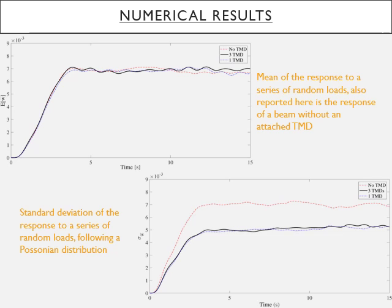Interestingly the numerical results show that the mean response to a series of random loads for any configuration of the beam with no TMD, with three TMDs, or with only one TMD is virtually identical. In the standard deviation we see that having one or three TMDs offers no advantage between one or three but offers a significant advantage over not having any TMDs.